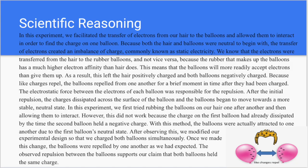In this experiment, we facilitated the transfer of electrons from my hair to the balloons and allowed them to interact in order to find the charge of one balloon. Because both the hair and the balloons were neutral to begin with, the transfer of electrons actually created an imbalance of charge, commonly known as static electricity. We know that the electrons were transferred from the hair to the balloons, and not vice versa, because the rubber that makes up the balloons has a much higher electron affinity than the hair does. This means that the balloons will more readily accept electrons than give them up.